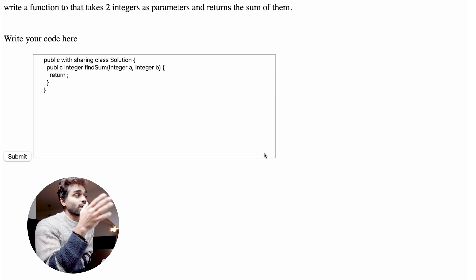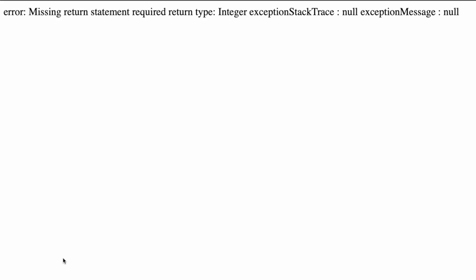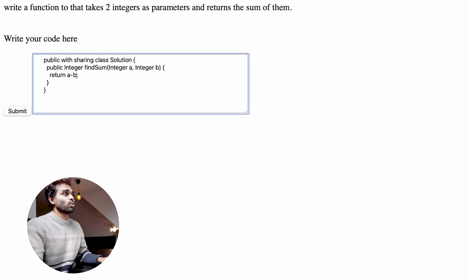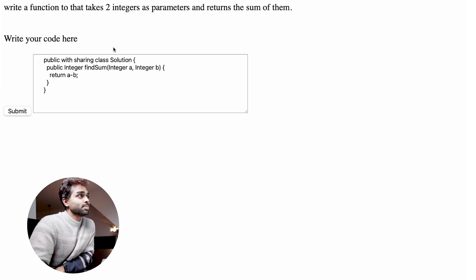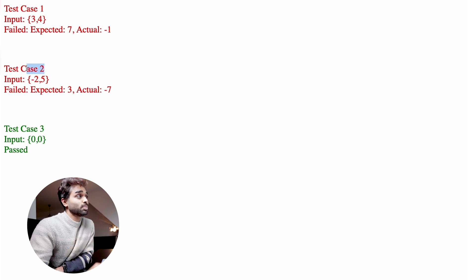For scenario one, I'll write wrong syntax — the function expects an integer return type but I'm just returning a semicolon. After submitting, I get: 'missing return statement, required return type is integer.' That works perfectly. For scenario two, I'll write the wrong solution — instead of a + b, I return a - b. After submitting, the test cases fail. Test case one had input 3, 4 — expected 7, actual was -1. Test case two had input -2, 5 — expected 3, actual was -7.